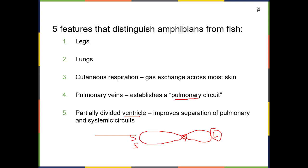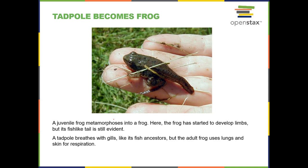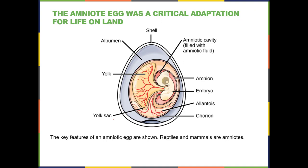When fertilized frog eggs hatch, they are tadpoles like a fish, and then those metamorphose into the frog. The tadpole breathes with gills; the frog has lungs. The lungs come from a different structure than the gills — the gills simply disappear and the lungs develop separately.